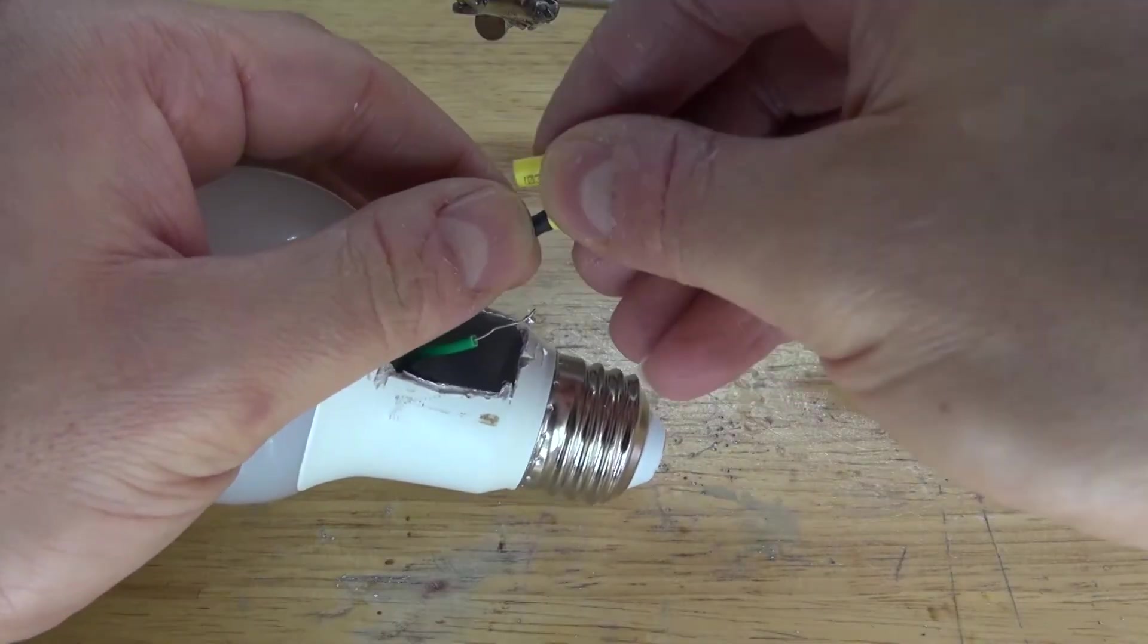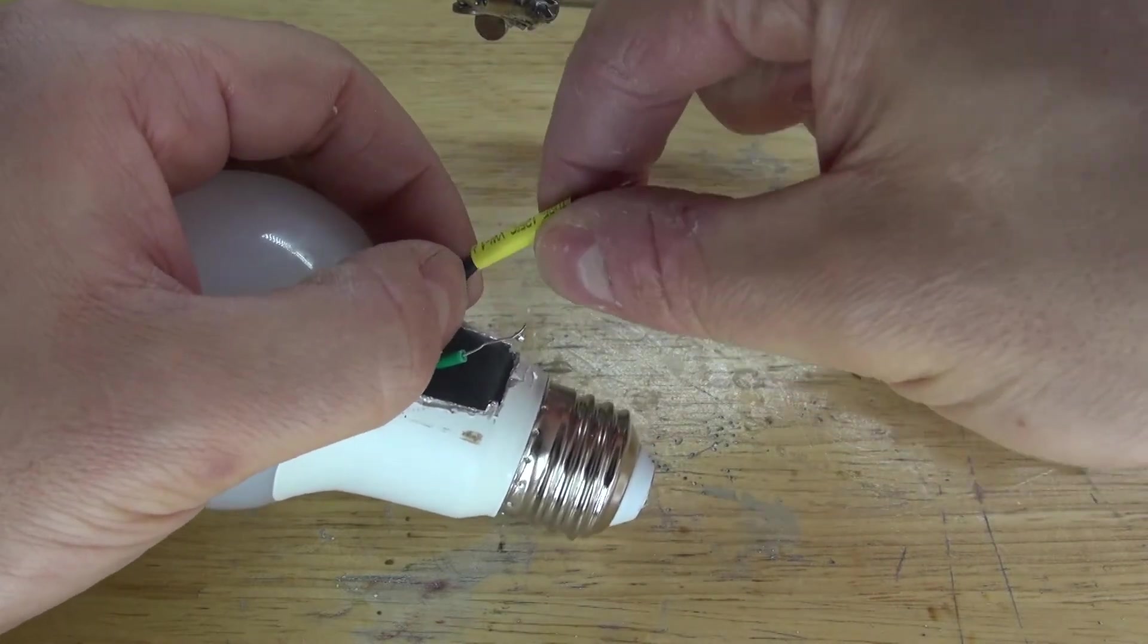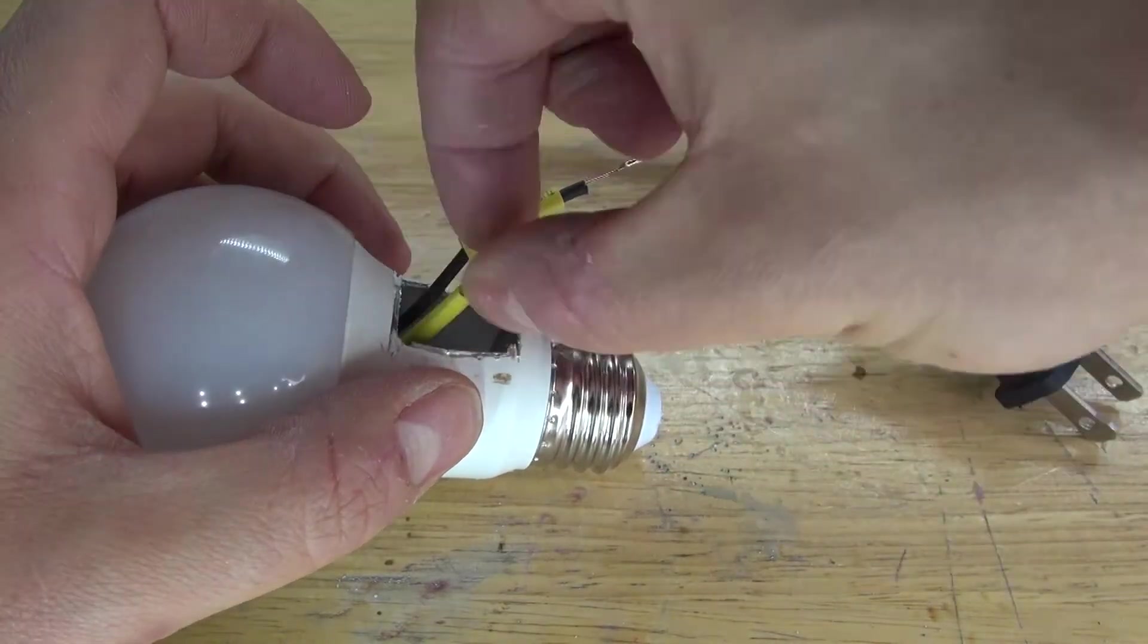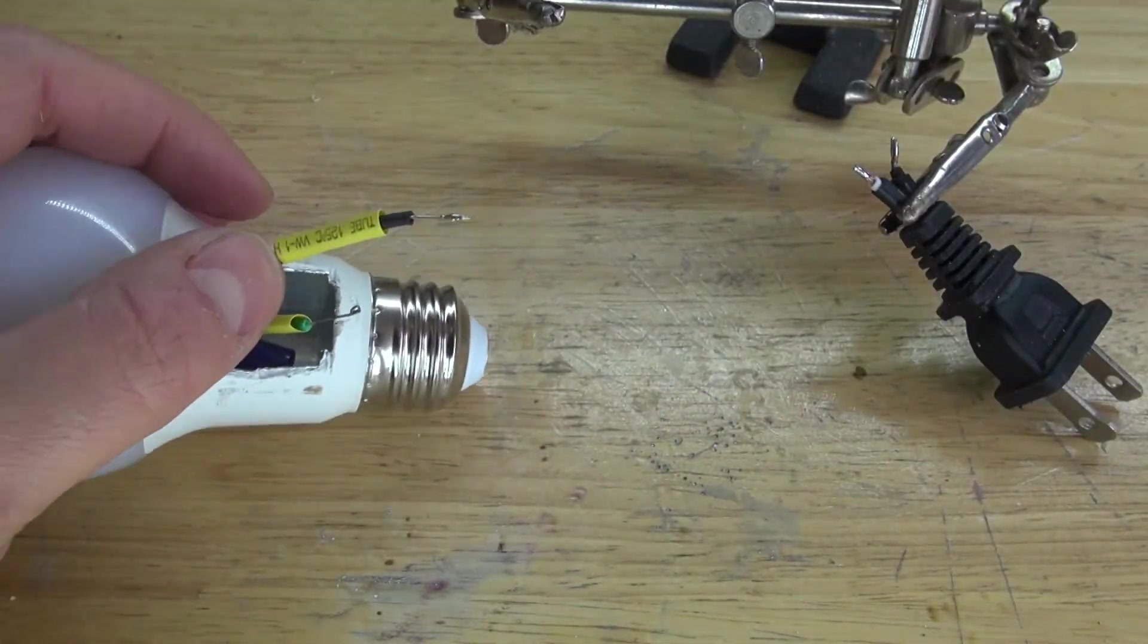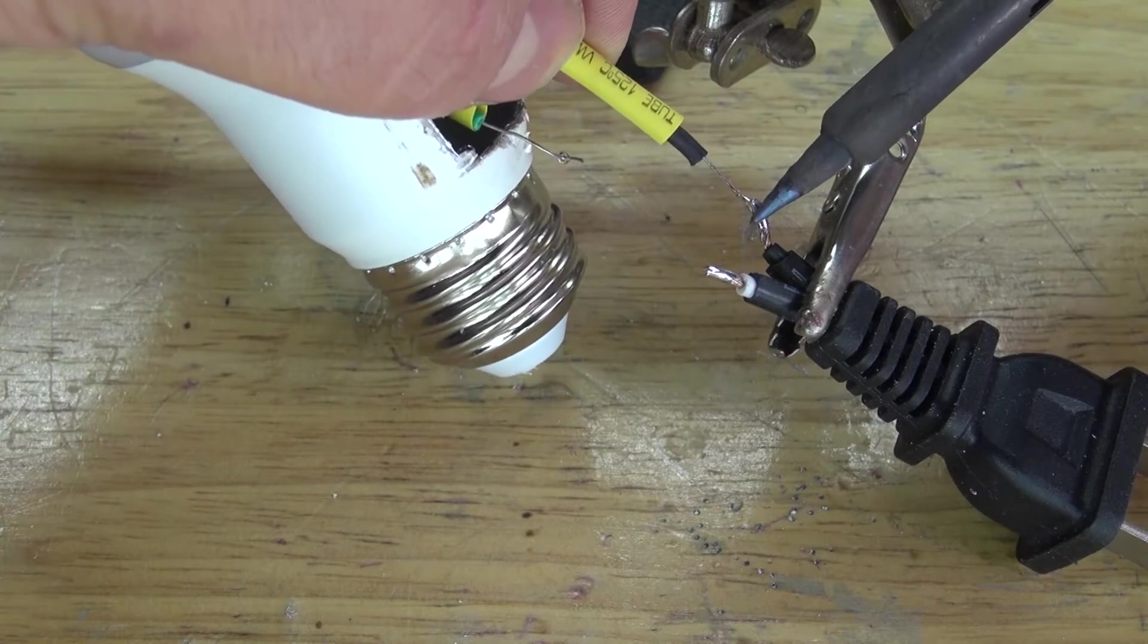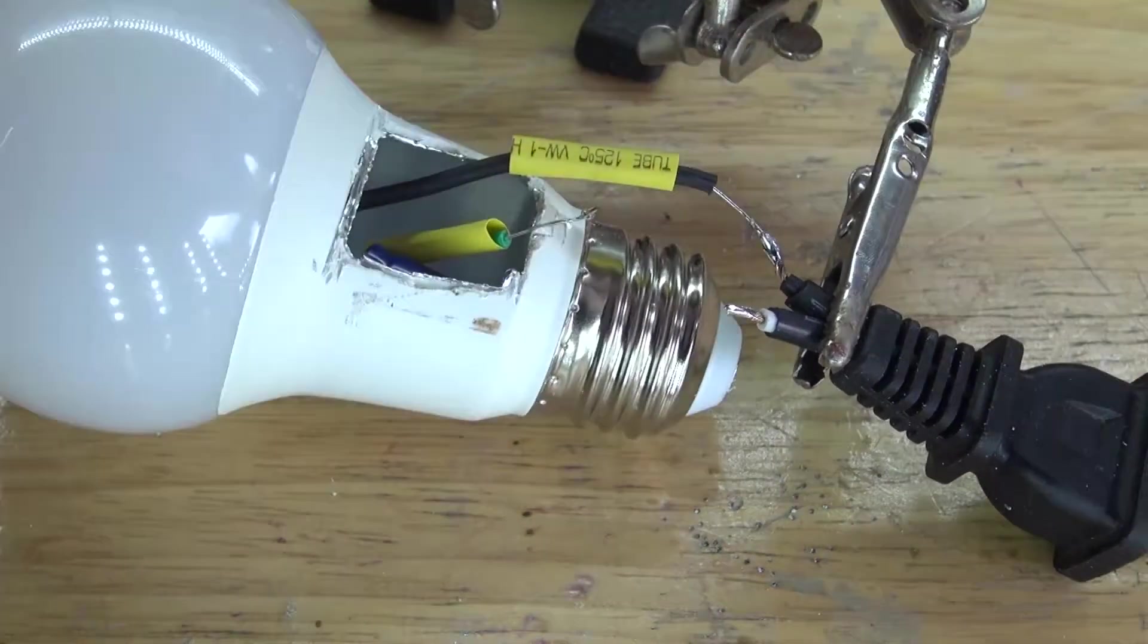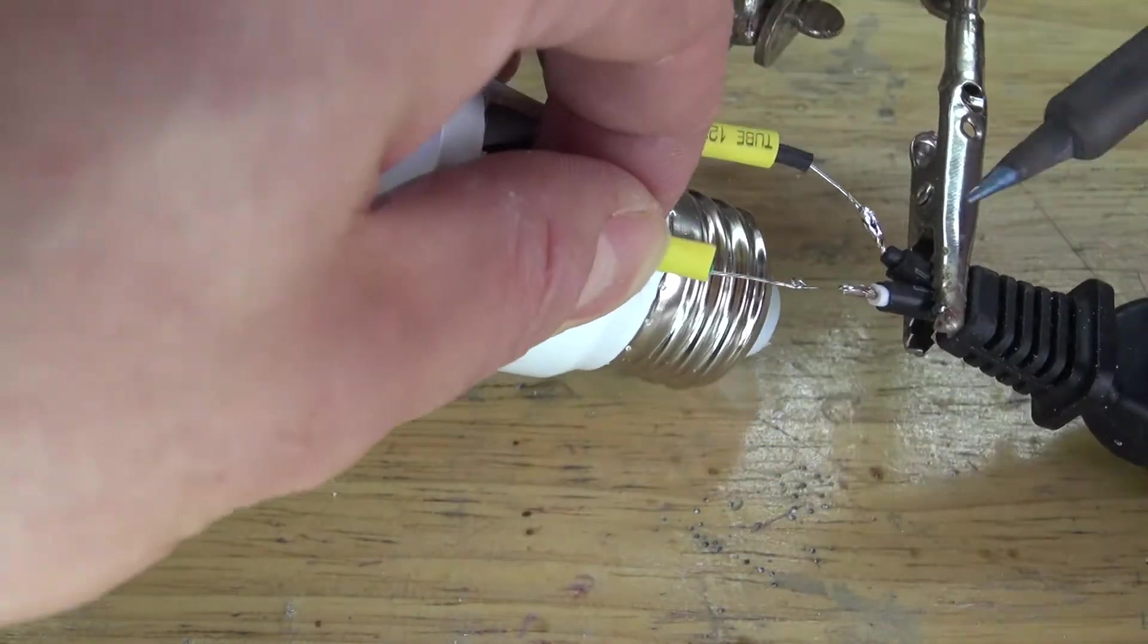Next take some shrink tubing, place it over the wires and now solder the wires together. Solder live to live and neutral to neutral.